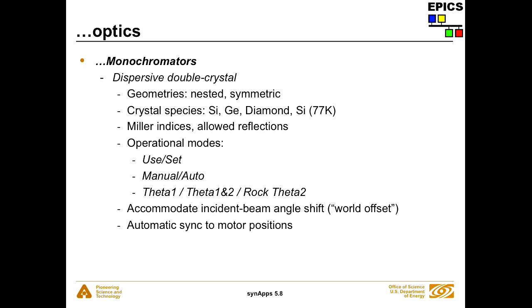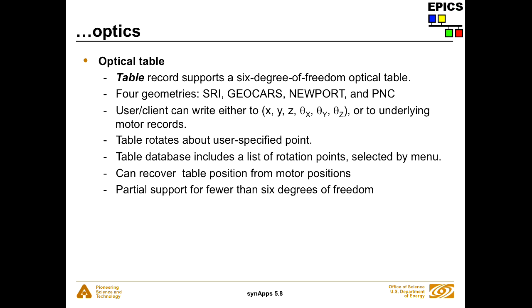The optics module also has support for a number of optical tables, mostly six-degree-of-freedom tables with four geometries. There are six virtual motors: X, Y, and Z translations, and rotations of the table about a fixed point. You can specify the point about which the optical table rotates, which is important for alignment — for example, you can scan until you get the beam into an entrance slit and then rotate the table about that slit. The geometries are entirely specified by the locations of the kinematic mounts and how the legs extend. They all support use/set so that after alignment you can call the current position zero.